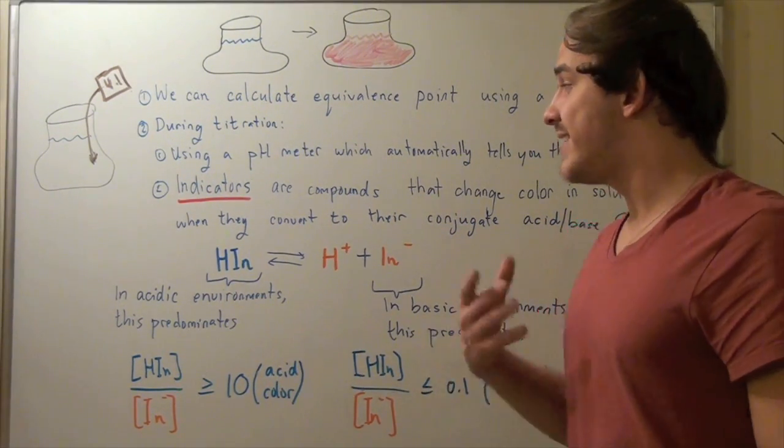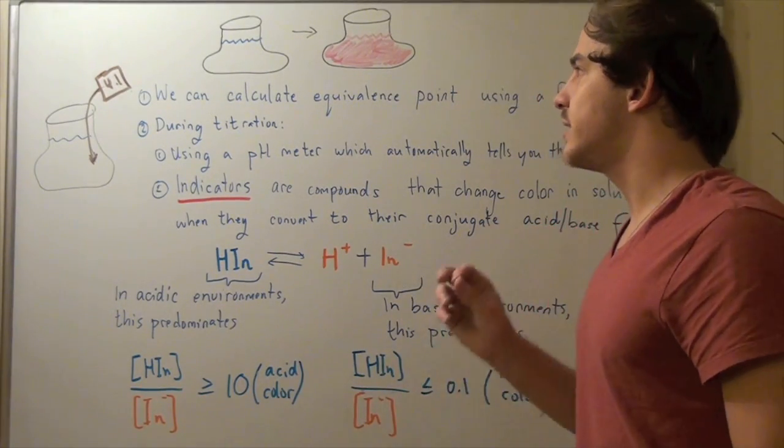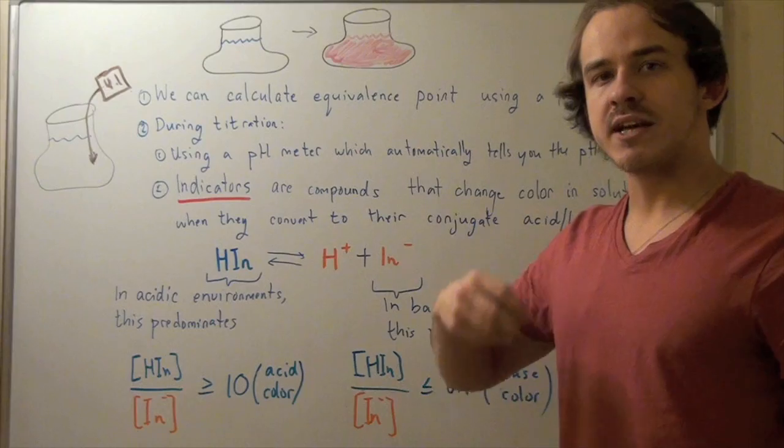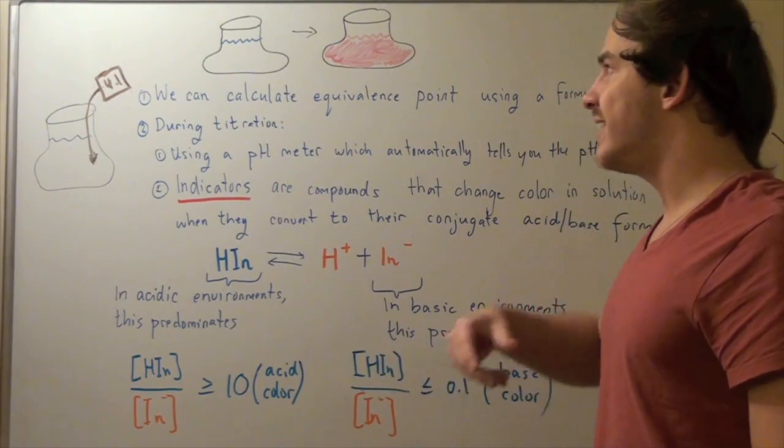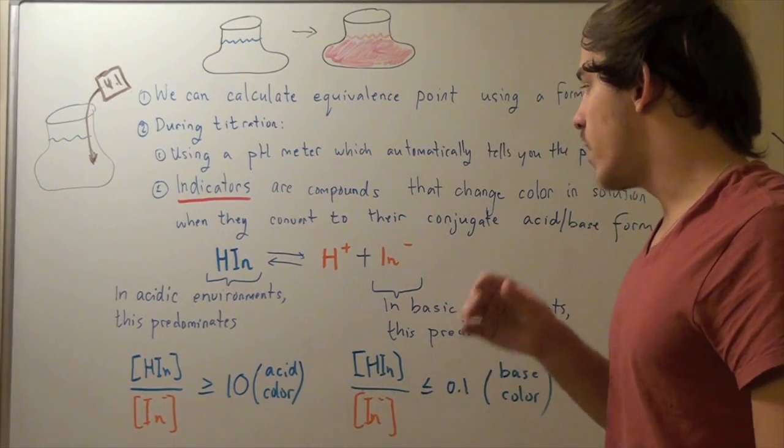What you do is you take your indicator, you take a very small amount of it, and you place it into your solution before you begin titration. And what the indicator does, it reacts with the H-plus ions in the following way.